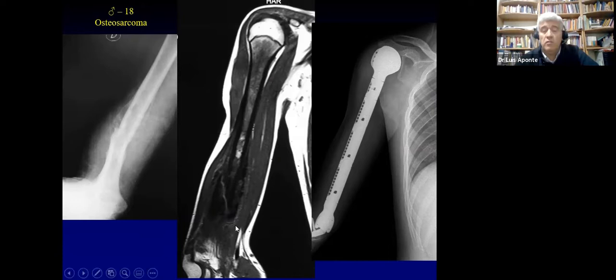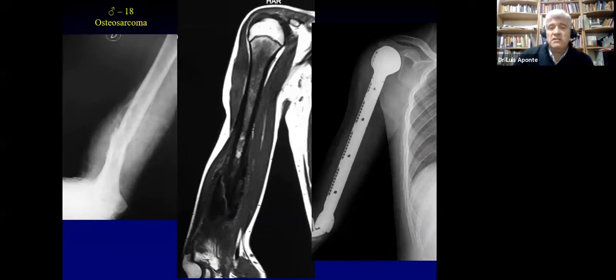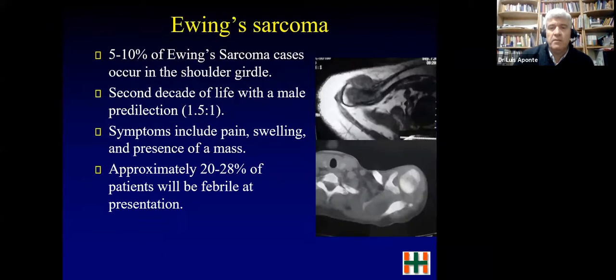Nowadays more than 95% of cases achieve limb preservation, but there is still about 4% of cases where we have to perform a disarticulation or amputation of the upper limb.